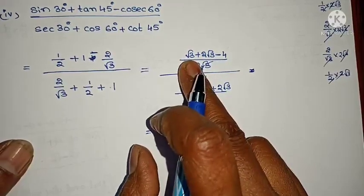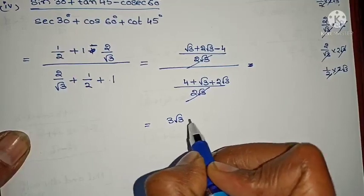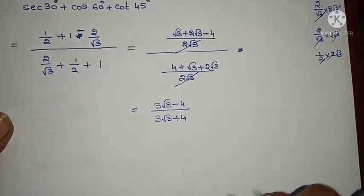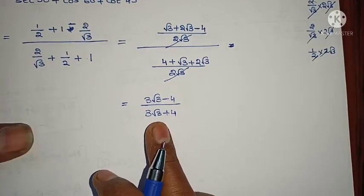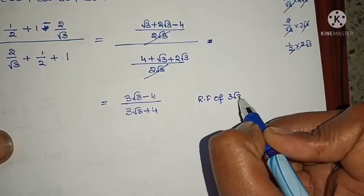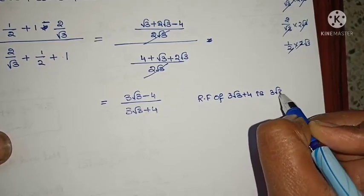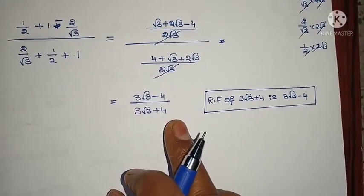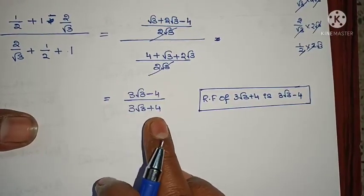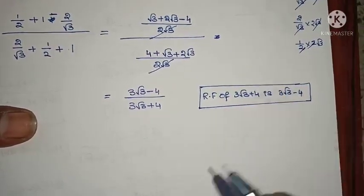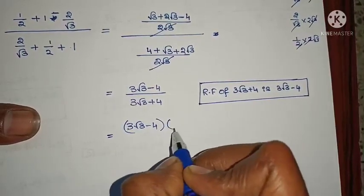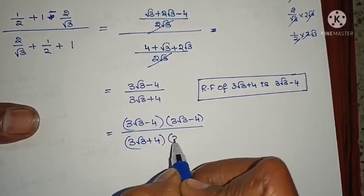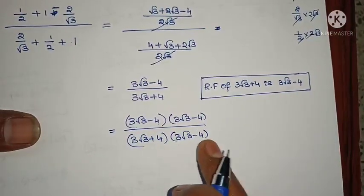So we have (3√3 − 4) / (3√3 + 4). In the denominator, I don't want root values, so take the rationalizing factor. RF of (3√3 + 4) is (3√3 − 4). Multiply and divide with (3√3 − 4). The denominator becomes (3√3 + 4)(3√3 − 4) = A² − B² = (3√3)² − 4².